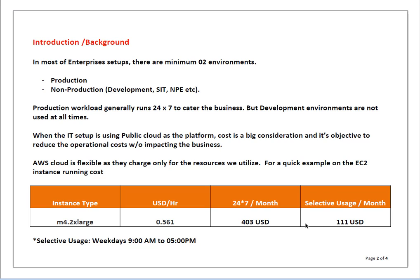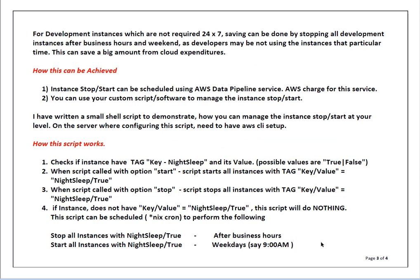You can see there is a big saving, and that is only for a single instance. If you are running 100 development instances — in big setups the development server count can be more than a thousand — you can see how much you can save by using selective usage. For development instances which are not required 24 by 7, saving can be done by stopping all development instances after business hours and on weekends, as developers may not be using them during that period.